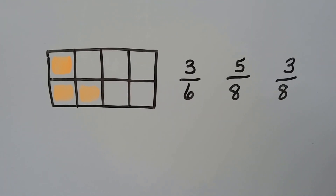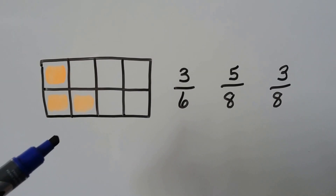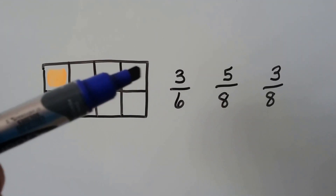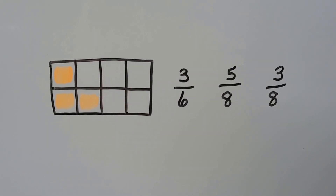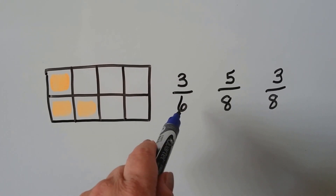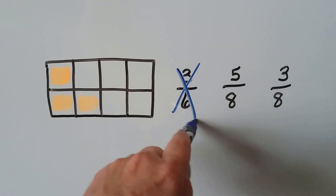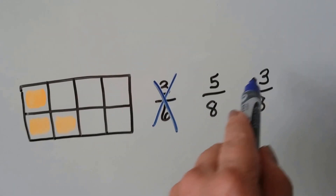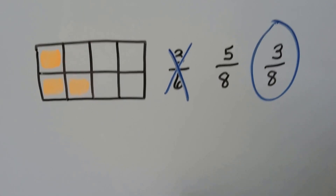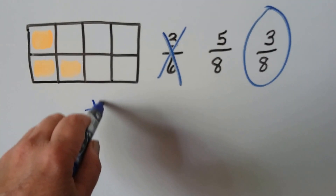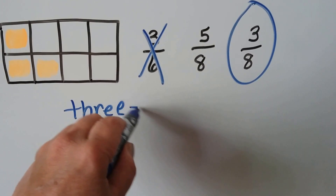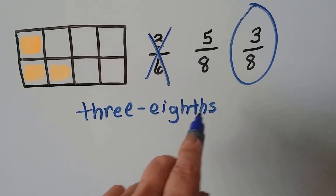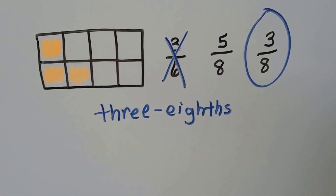Let's look at this one. Which fraction names the shaded parts? Let's count the number of equal parts: one, two, three, four, five, six, seven, eight — there's eight equal parts. So we know this is not one of the answers because it's got a six for the equal parts and we counted eight. How many are shaded? One, two, three — three are shaded and there's eight equal parts. This is the answer: three eighths. It's got two H's in it — like eight with THS at the end. Three eighths.